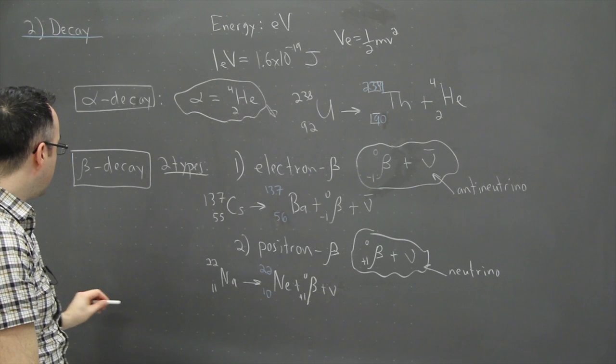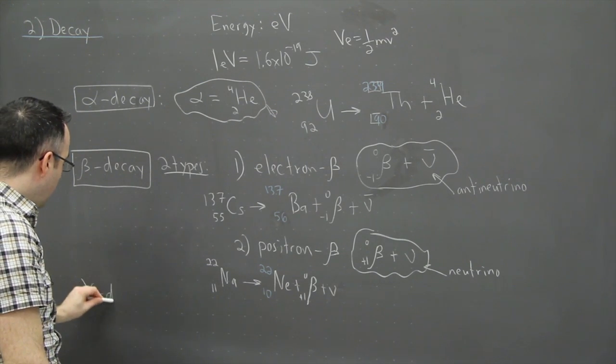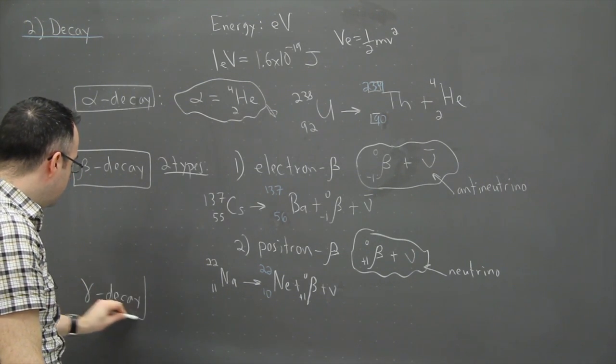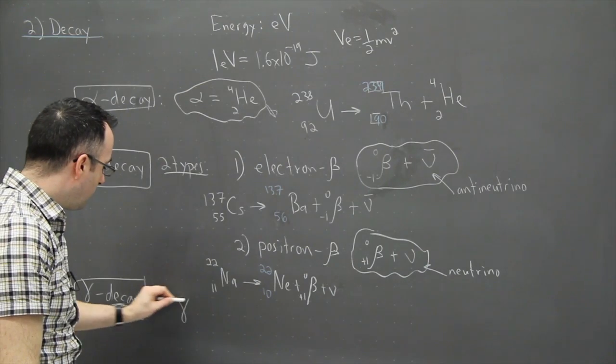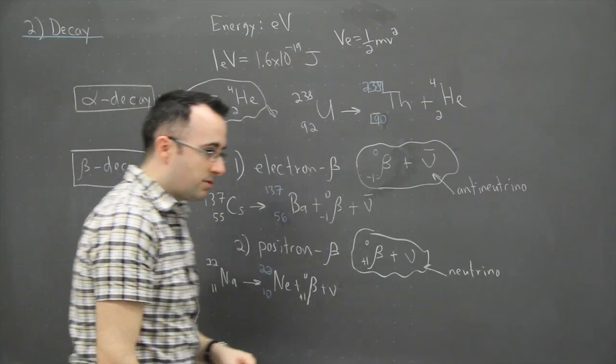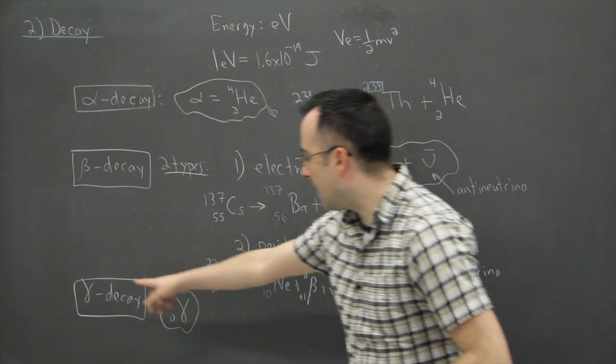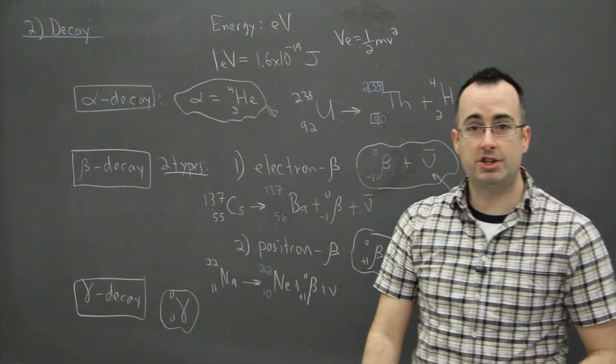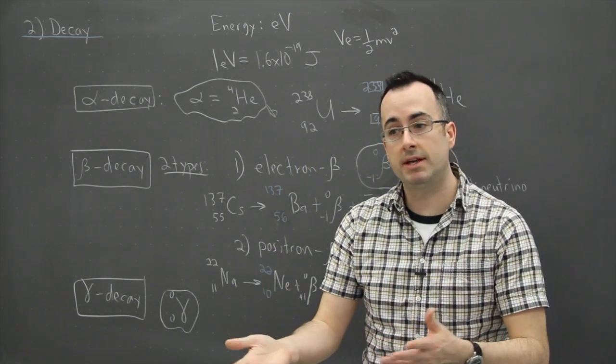And very last thing, of course, is gamma decay and nothing exciting happens there because this is just light. So a gamma particle is nothing but a photon. So that means when you look at this right here, we write it with this symbol here, gamma, and it's just a photon,